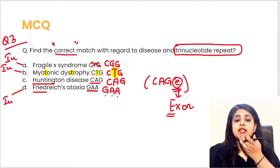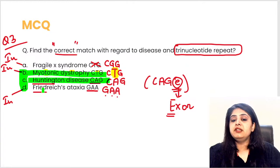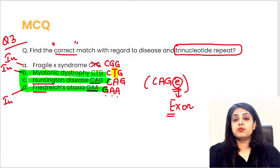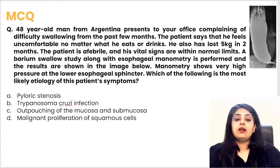So ultimately all of B, C, and D were correct — the only incorrect option was A, since Fragile X is CGG not CTG. This type of multiple-correct-answer question is increasingly common in INI-CET, NEET, and FMG exams — they are designed to make you spend more time and make life a little tougher.